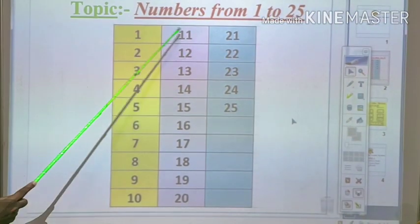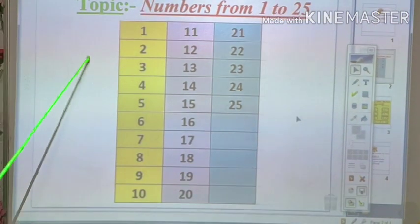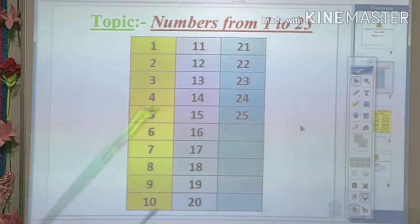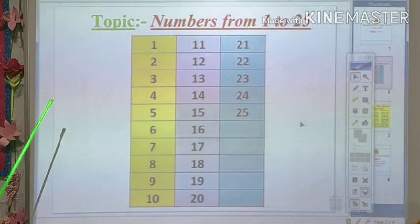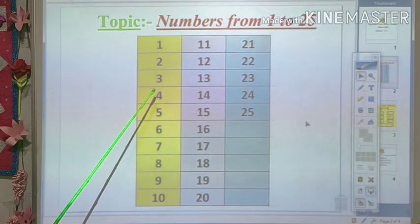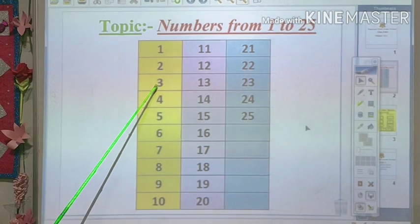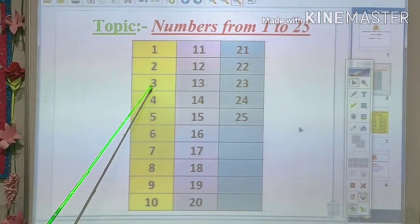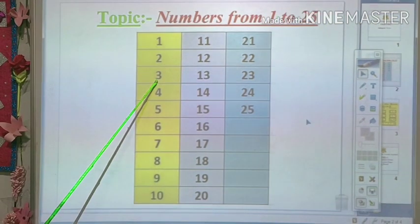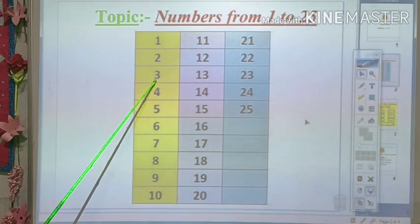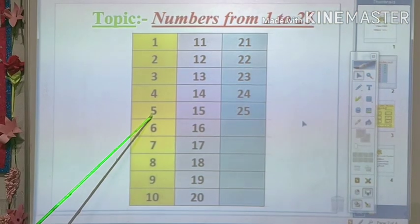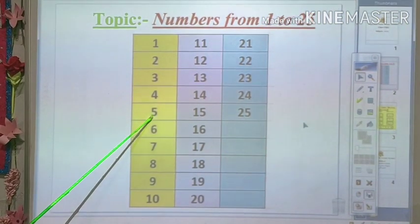So kids, we are learning the numbers from 1 to 25. Now I will ask you to pay attention. Where I will keep the pointer, you will see what number is this called — let me know. What is this number? 3. Number 3. Now let me know, what is this number? Number 5.